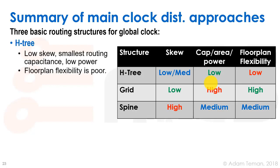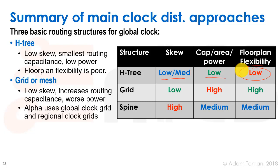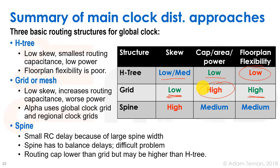To summarize the main clock distribution approaches: an H-tree gives pretty good skew with very low capacitance, area, and power, but floor plan flexibility is very low, making it impractical. A clock grid or mesh gives the best — really very low skew — with excellent floor plan flexibility, but capacitance, area, and power are inconceivable. Clock spines offer a median solution with okay capacitance, area, and power, and okay floor plan flexibility, but skew performance is not as strong.